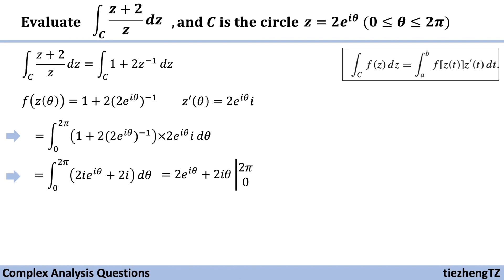And we need to find its antiderivative, which is 2 times e to the power of i theta plus 2 times i times theta. And we are going to do the math from 0 to 2 pi.